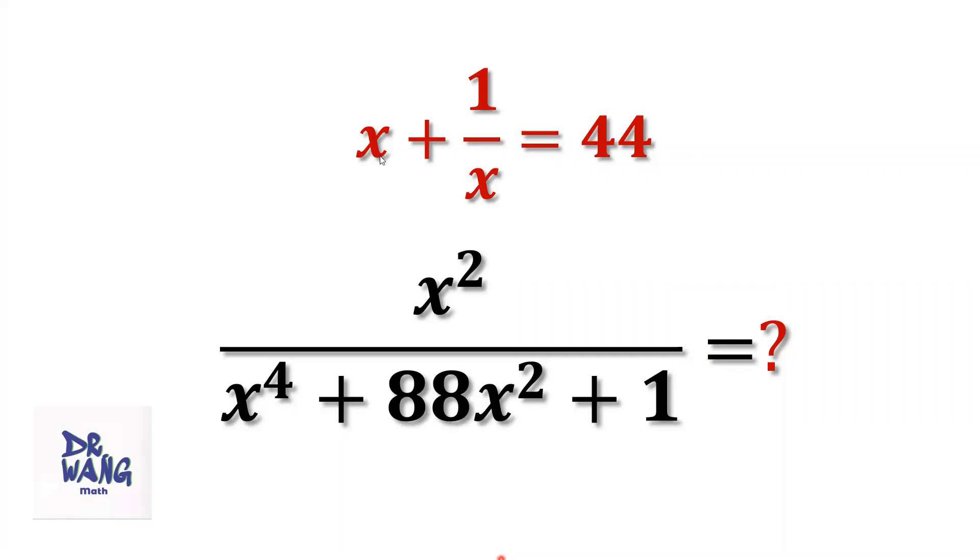If x plus 1 over x equals 44, what is the value of x squared over x to the power of 4 plus 88 times x squared plus 1?